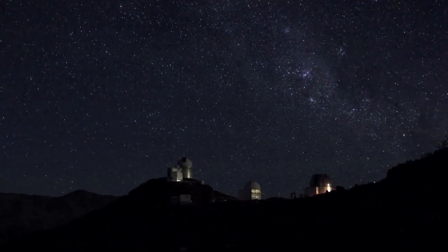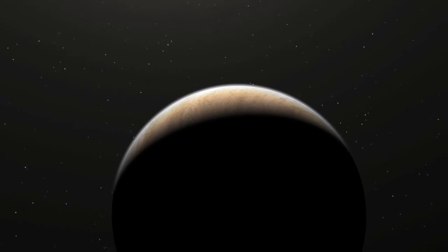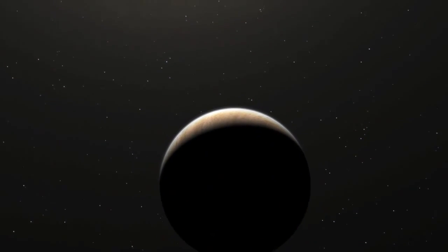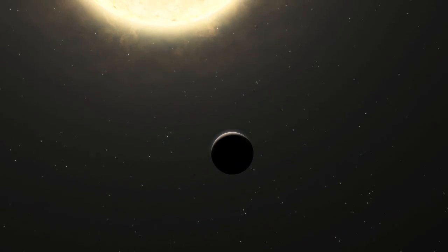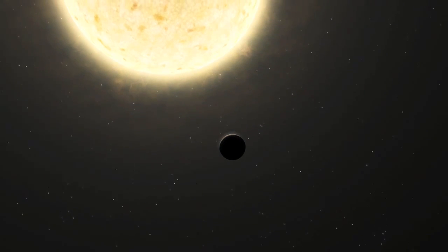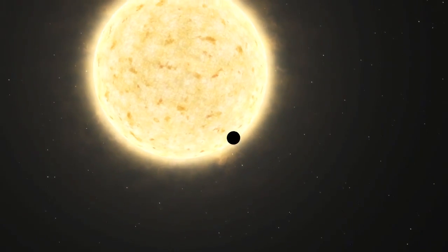The astronomers hypothesize that the planet's orbit might initially have been much larger, but that it moved inwards during the red giant phase. Any closer-in planets may not have been so lucky. Astronomers suggest that some inner planets may have been swallowed by the star during its red giant phase.